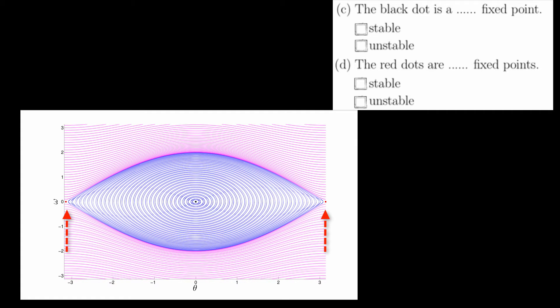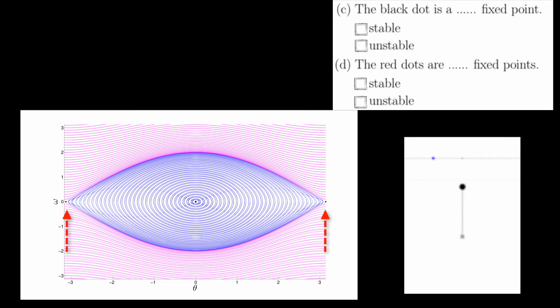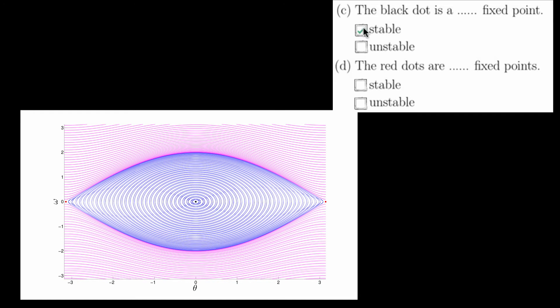For the red dots, notice that theta is an odd multiple of pi. That means the pendulum is in this position. Also notice that omega is zero, so the pendulum is not moving. We know from lecture and real life that this pendulum is unstable. Even blowing on this pendulum would cause the pendulum to fall over. This type of fixed point is referred to as a hyperbolic fixed point or a saddle point. We'll learn much more about this type of fixed point in unit 4. For these reasons, the black dot is a stable fixed point and the red dots are unstable fixed points.